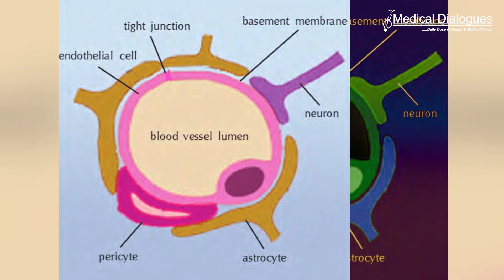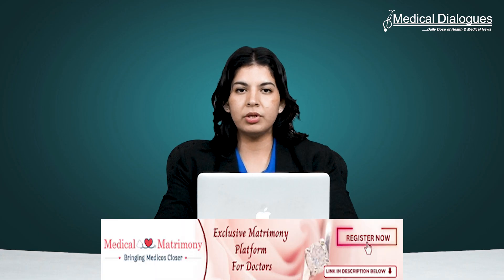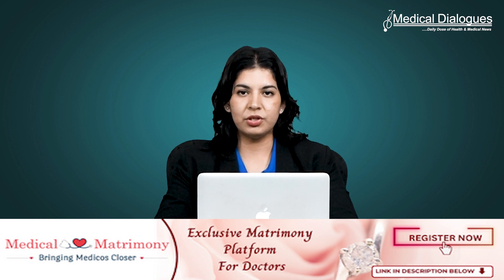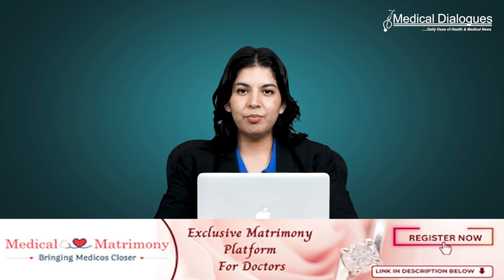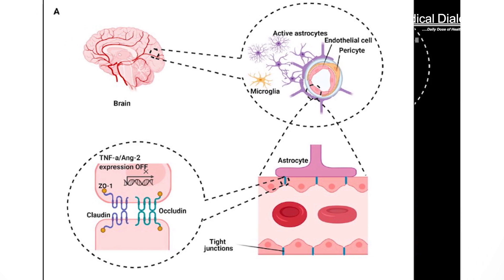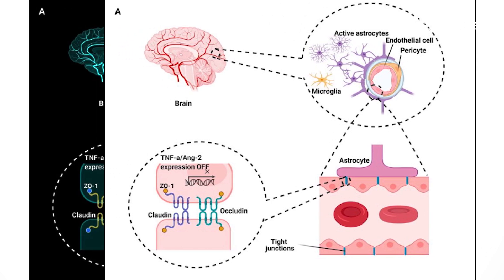Pericytes, as mural cells tightly attached to the outer side of endothelial cell tubes and capillaries, play a crucial role in maintaining the integrity of the BBB. Therefore, understanding the development of brain pericytes is essential for studying the formation and maintenance of the BBB. Previous research has indicated that blood flow, the most important functional behaviour of blood vessels, participates in regulating the development of brain endothelial cells. However, whether blood flow affects the growth of brain pericytes remains an unexplored question.